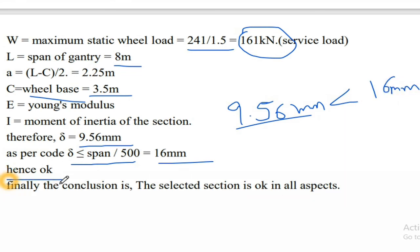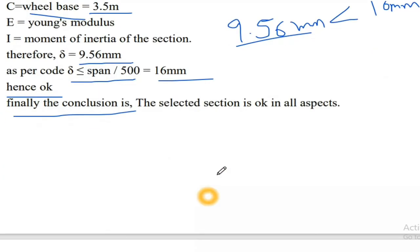Conclusion: The selected section ISWB 600 + ISMC 300 is safe and okay in all aspects.